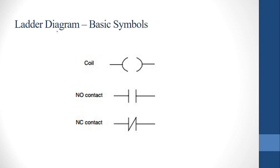Now, the ladder diagram uses symbols. There are three basic symbols. The first is the coil, which represents the output. The second is the normally open contact — there is no connection by default. The third is the normally closed contact. Normally open and normally closed are the two contact signs used in the ladder diagram.